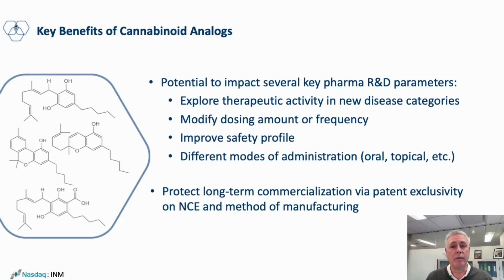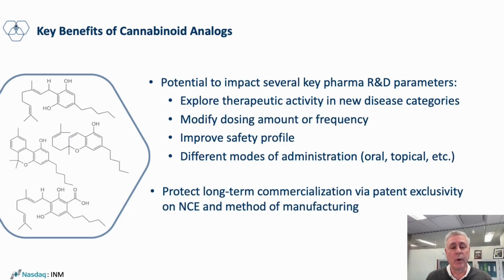You can create an analog in order to modify the dosing amount or frequency of giving the drug. You can potentially improve the safety profile of the drug, and you can look into different modes of administration with an analog that might not work for the naturally occurring compound. Also really key is that it helps protect long-term commercialization by filing a patent for this analog — which we refer to as a new chemical entity — as well as the method for manufacturing it.